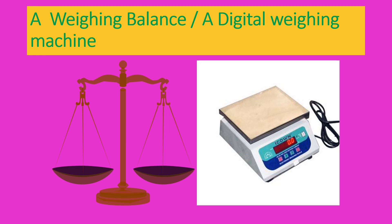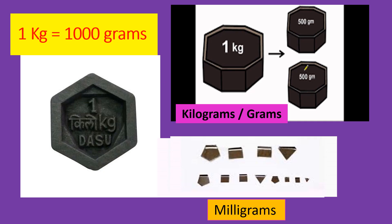Now you may think what weights? Well, I am sure all of you have seen this sometime or the other. These are iron weights, metal weights. As you can see on the left hand side we have a one kilogram weight. One kilogram is actually 1000 grams. Look at the picture given there above — one kilogram is actually the equal of 500 and 500. You know 500 and 500 is 1000. So these are the measures of kilograms and grams.